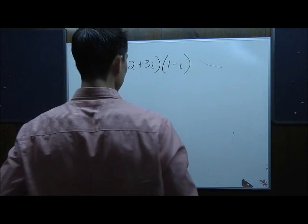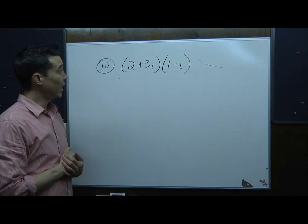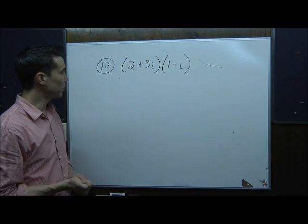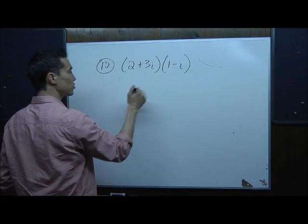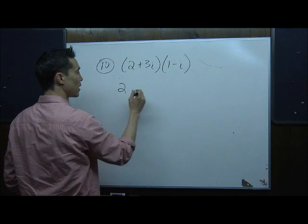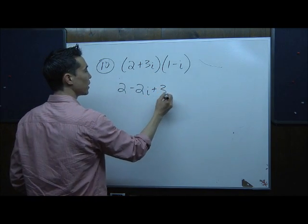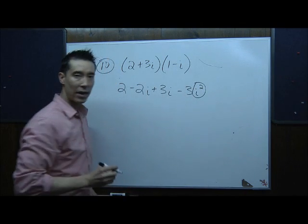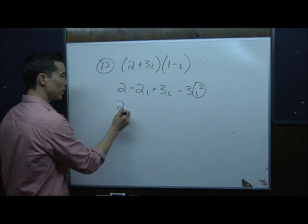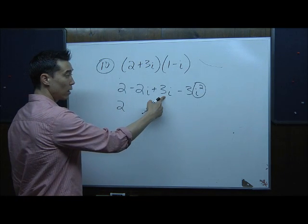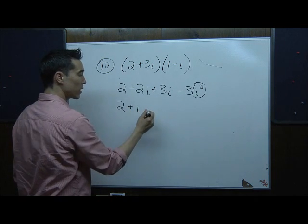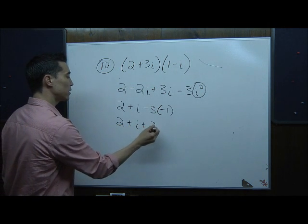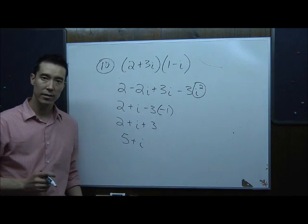Number 10: (2 plus 3i) times (1 minus i). We FOIL, remembering that i squared equals negative 1. Foiling: 2 times 1 is 2, 2 times negative i is minus 2i, 3i times 1 is plus 3i, and 3i times negative i is minus 3i squared. Replacing i squared with negative 1: minus 3 times negative 1 is positive 3. Combining: 2 plus 3 is 5, and negative 2i plus 3i is plus i. Answer: 5 plus i.